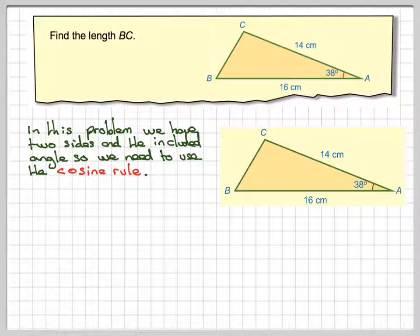Again, we label the triangle the same way. So this will be side A, this will be side B, and this will be side C.